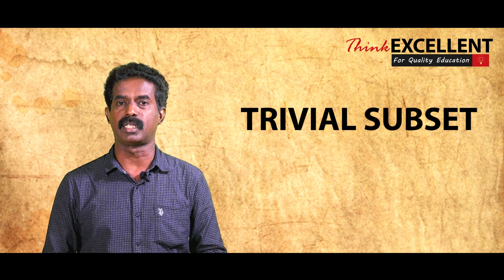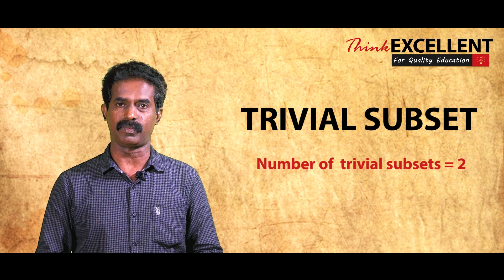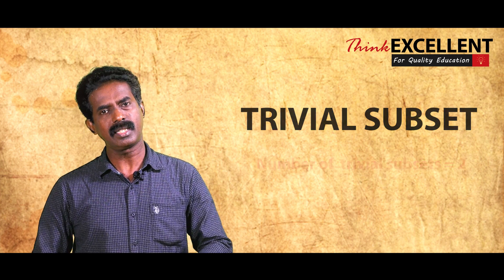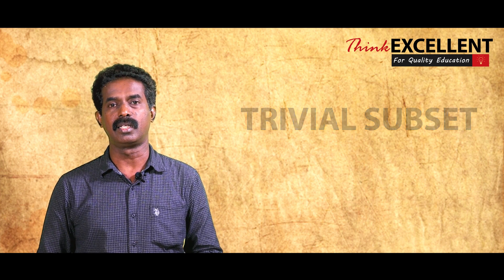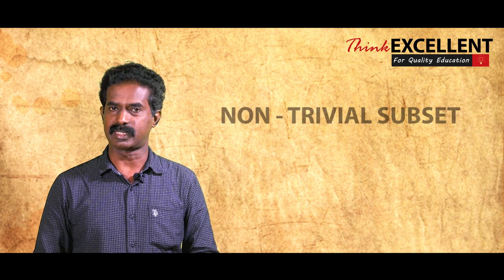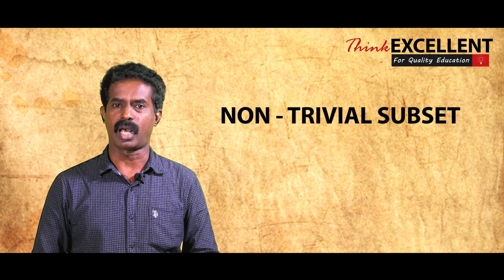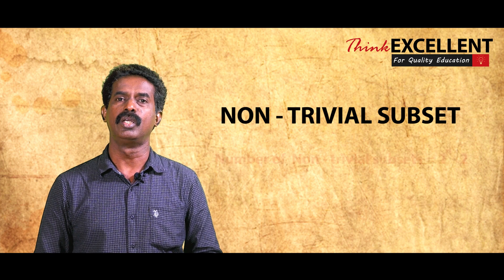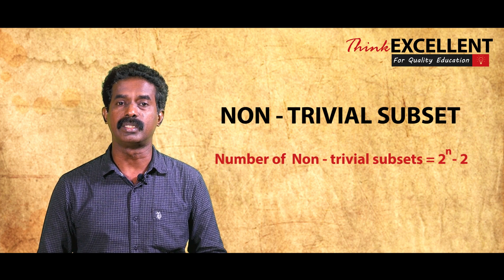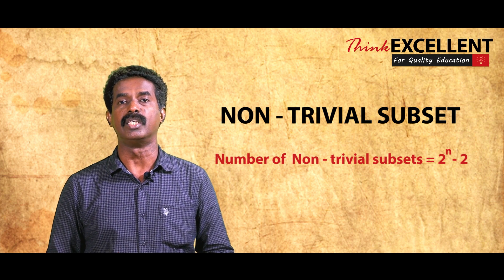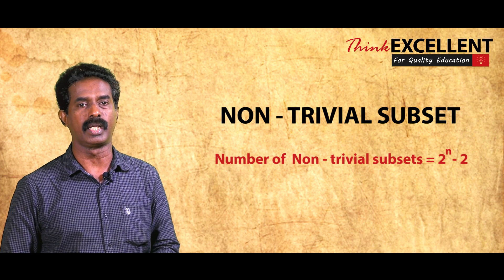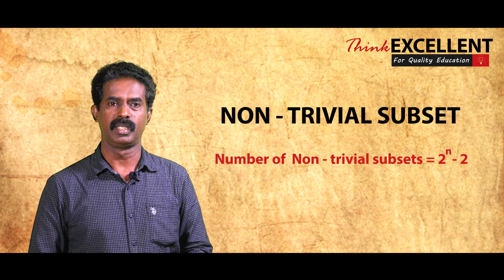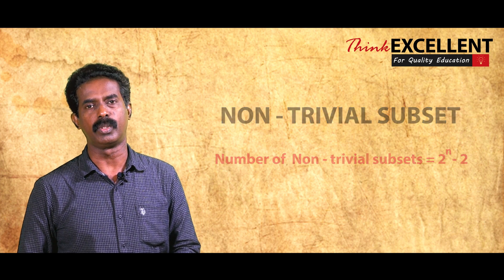There are two trivial subsets. All other subsets are called non-trivial subsets. The number of non-trivial subsets is 2 raised to n minus 2.